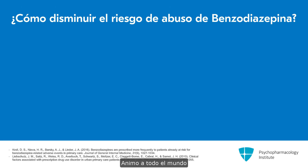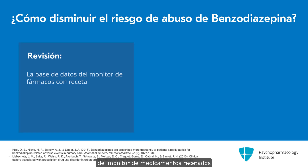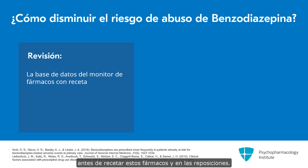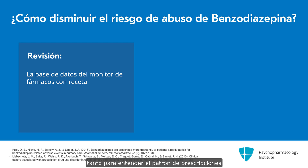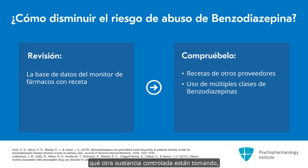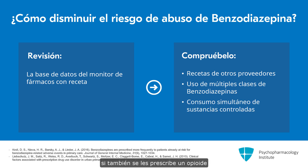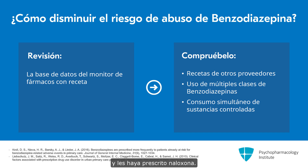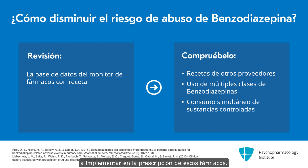I encourage everyone to routinely review the prescription drug monitoring database available to them before prescribing these medications and on refills. This is important to understand the pattern of prescriptions, whether patients have gotten prescriptions from other providers, if they're on more than one medication in this class, what other controlled substances they are on, and if they are also prescribed an opioid — in which case you should advise them of the risk of overdose and prescribe naloxone. This is a really important step to implement when prescribing these medications.